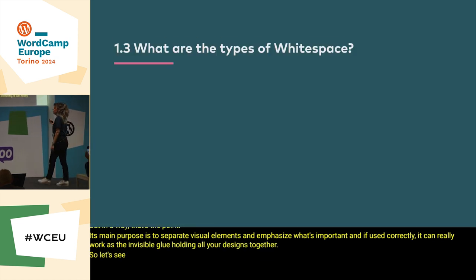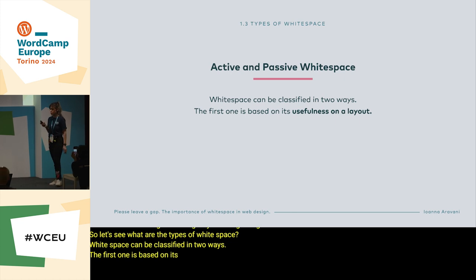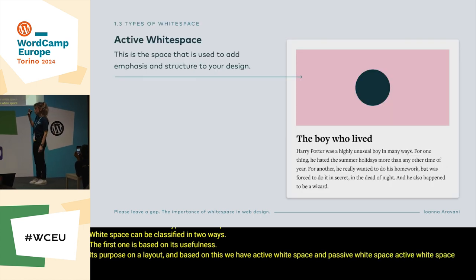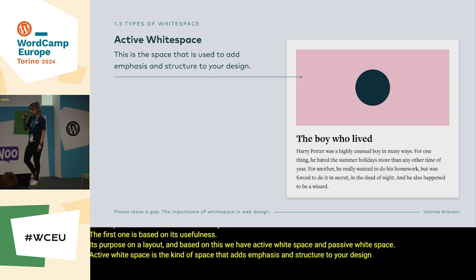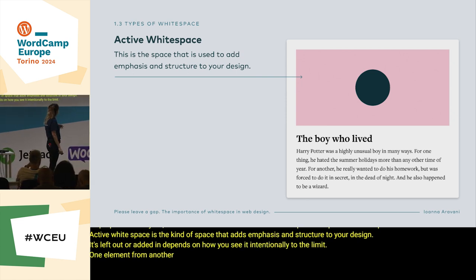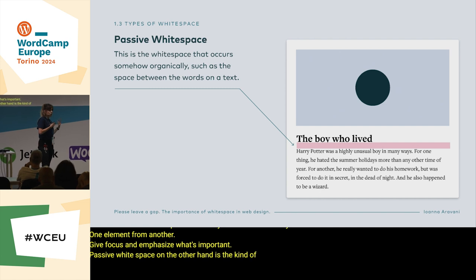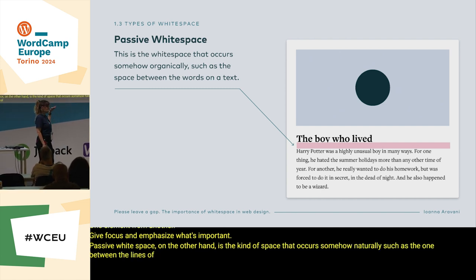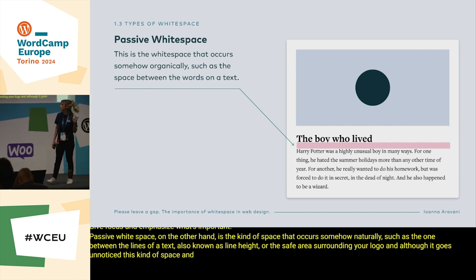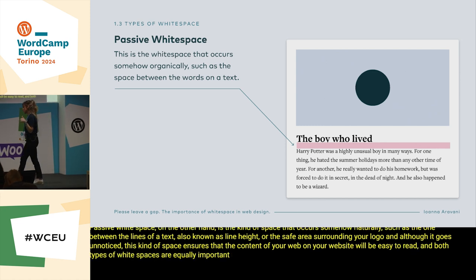Let's see what are the types of white space. White space can be classified in two ways. The first is based on its usefulness — its purpose on a layout. We have active white space and passive white space. Active white space is the kind of space that adds emphasis and structure to your design. It's intentionally added to delimit one element from another, give focus and emphasize what's important. Passive white space, on the other hand, is the kind of space that occurs naturally, such as the space between the lines of a text, also known as line height, or the safe area surrounding your logo. Both types are equally important to achieve a balanced final design.